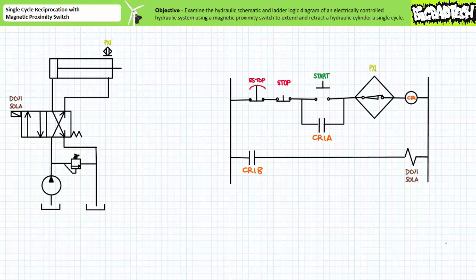The one exception being the diamond symbol surrounding it. This symbol represents a solid state magnetic proximity switch PX1. Magnetic proximity switches are used to detect the presence or absence of a magnetic object inside the range of a magnetic field produced by the switch without the necessity of having to make physical contact with the object.